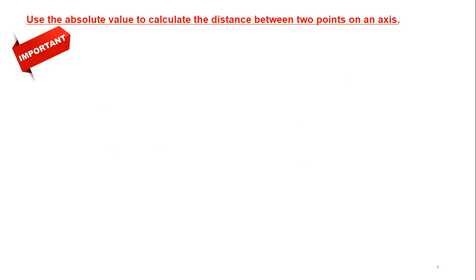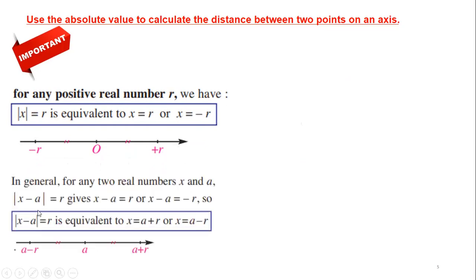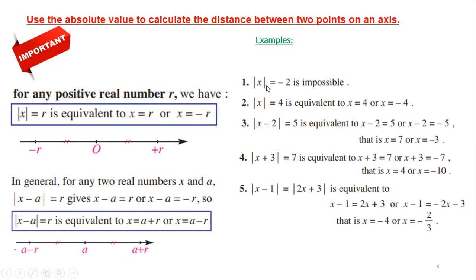As a refresh, we use the absolute value to calculate the distance between two points on an axis. For any positive real number r, |x| = r is equivalent to x = r and x = minus r. Also in general, for any two real numbers x and a: |x minus a| = r, then x = a plus r and x = a minus r. As examples: |x| = minus 2 is impossible — it's impossible to have an absolute value equal to a negative. |x| = 4 gives x = 4 or x = minus 4. |x minus 2| = 5 gives two cases: x minus 2 = 5 and x minus 2 = minus 5, and we solve each.